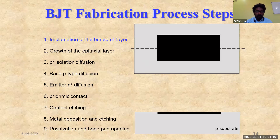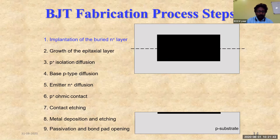This N-type region acts as a contact to the collector and is called the buried layer. This buried layer is created inside the P substrate, nearly 10 to 15 units into the P substrate — that's why it is called a buried N+ layer.